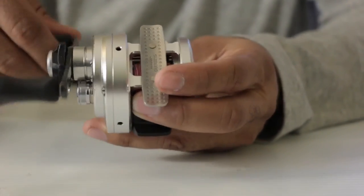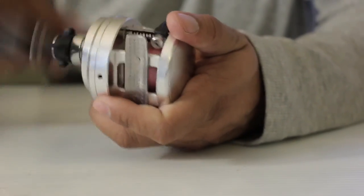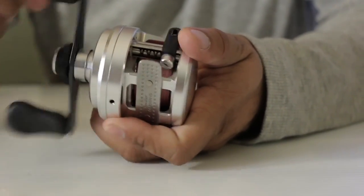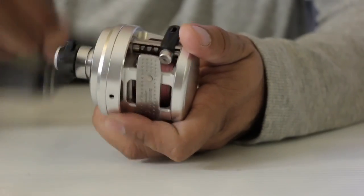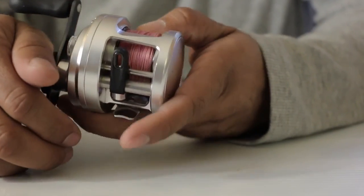So that your level wind is working just fine. And if you spin it around a few times, it'll spread it around and you should be fine. All right.